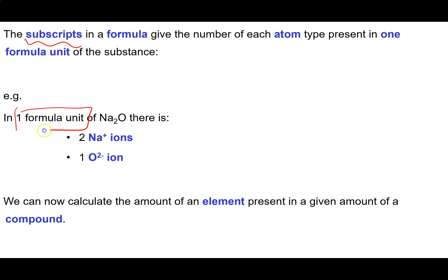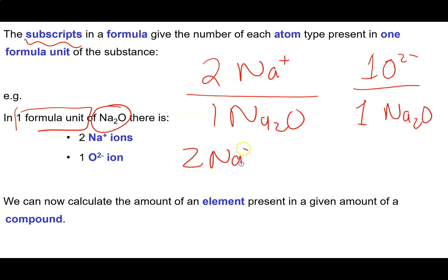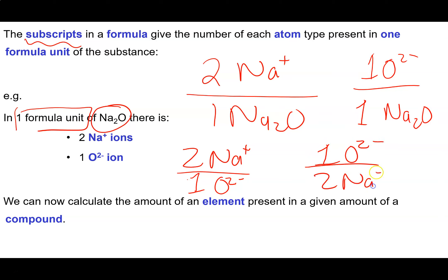In one formula unit of sodium oxide, we know that we get two sodium ions for every one sodium oxide. We also know that we get one oxide anion for every one formula unit of sodium oxide. We could also write that we get two sodium ions for every one oxide anion. We can write these fractions — these mole ratios — either way up. We can write a whole bunch of these ratios expressing how one thing is related to another given a chemical formula.